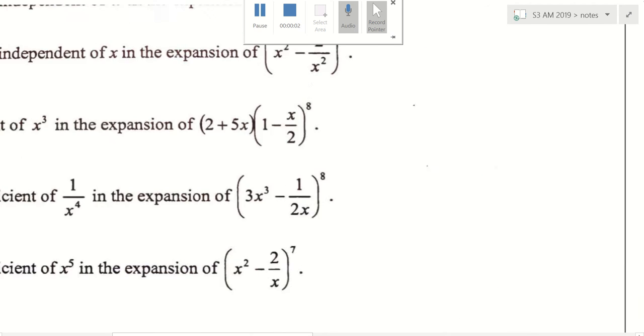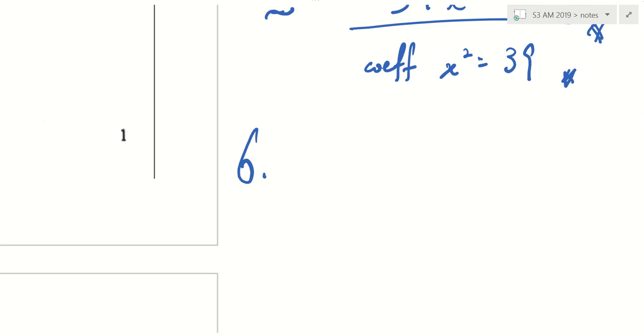On your fullscap, write down this. Can you read for me? The bracket what? 2x² minus 1 over 3x power 9. So this is your question 6.